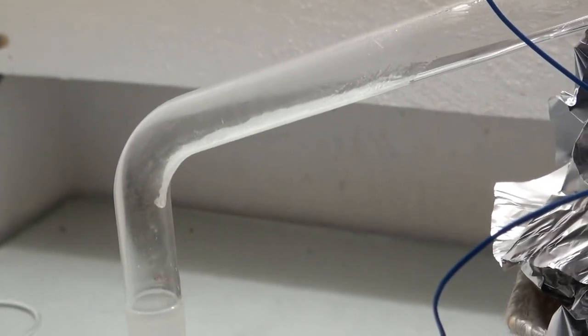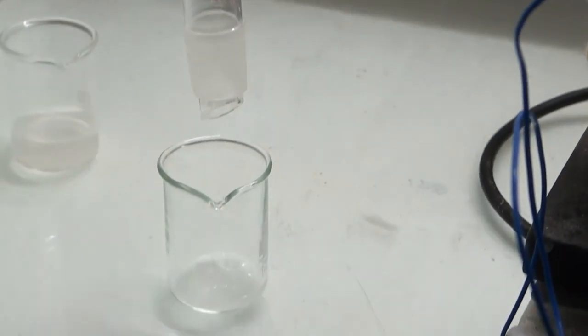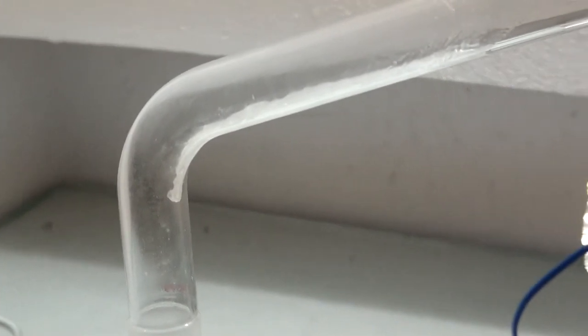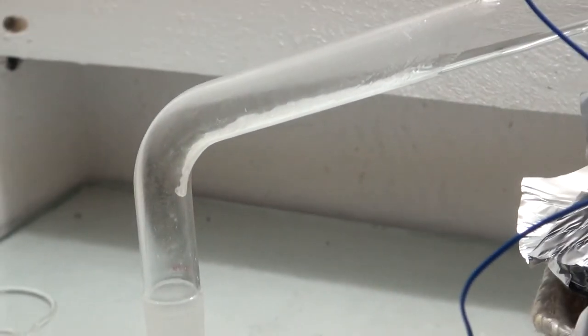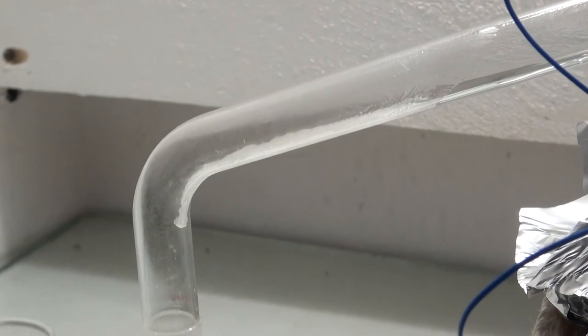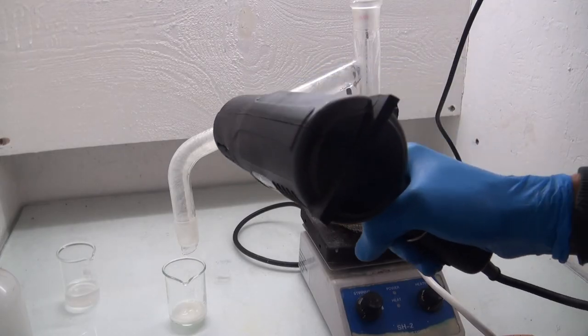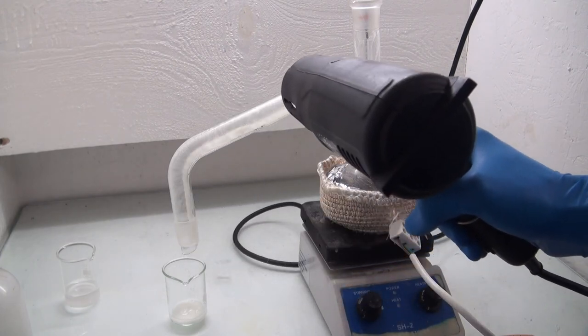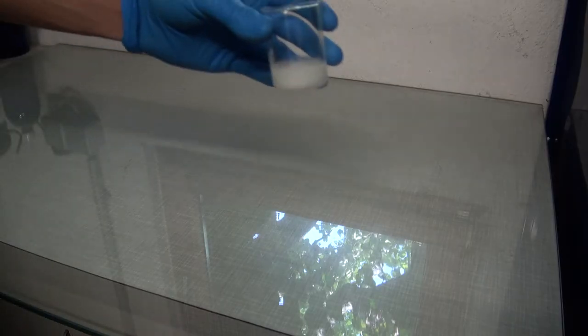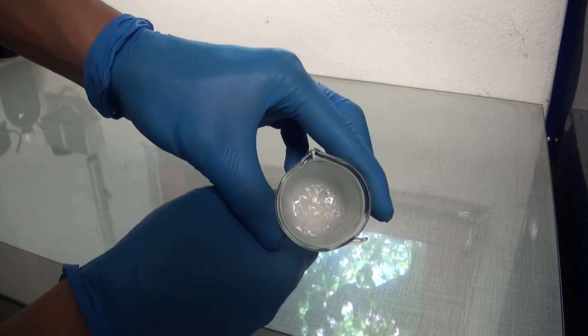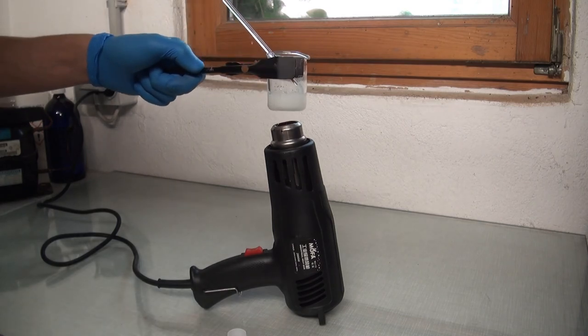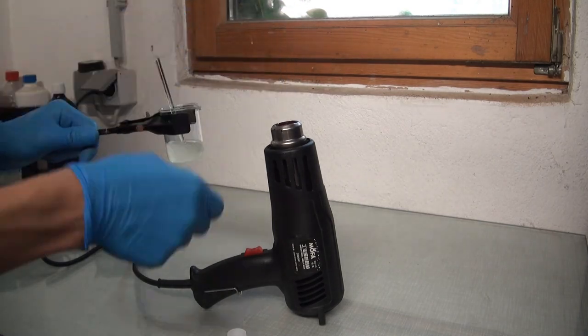First only water came over but after a while some beautiful white chloroacetic acid started condensing. After the distillation was finished the leftover solid was melted out of the arm. Next the solid was molten again and transferred into a storage container.